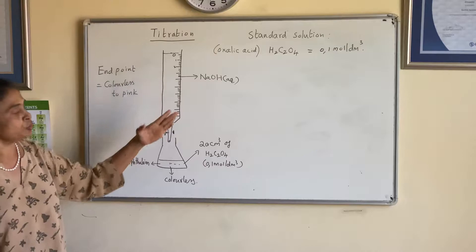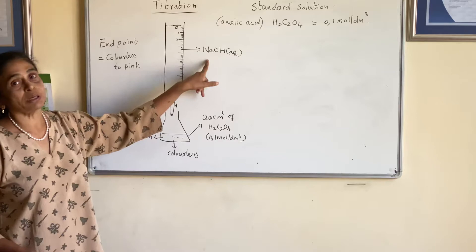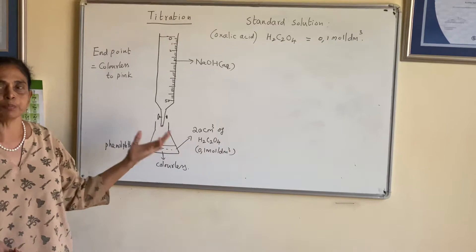We can use one more burette to measure the exact volume of oxalic acid. We are going to use oxalic acid as the acid and sodium hydroxide as the base. We are going to prepare a standard solution of oxalic acid.